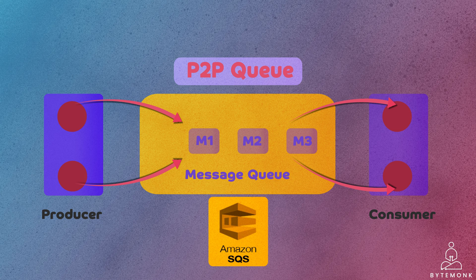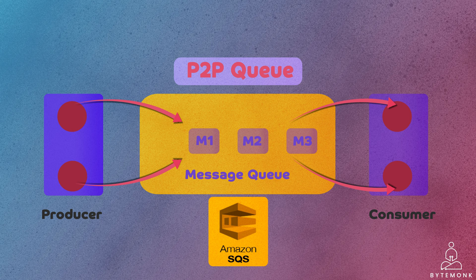SQS, which stands for Simple Queuing Service, is a fully managed messaging queue service provided by AWS. It is an implementation of the P2P messaging pattern, and is commonly used in various scenarios including distributed application architecture, microservices communication, and event-driven systems.